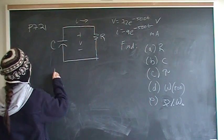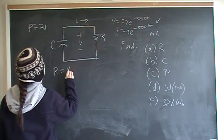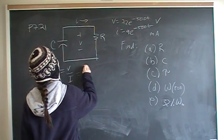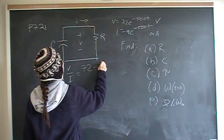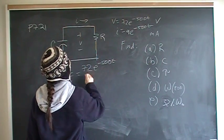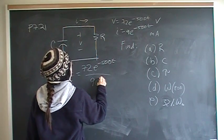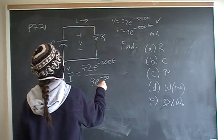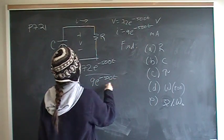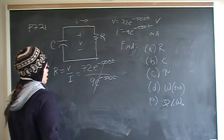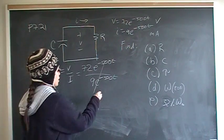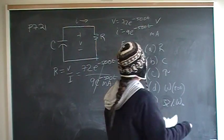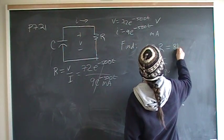V equals IR, so R is equal to V over I. You should know that in your sleep by now. That's going to be 72e to the minus 500t over 9e to the minus 500t. The e's cancel out, and we're in milliamps here, which means we'll be in kilo-ohms. So for part A, the answer is 8 kilo-ohms.